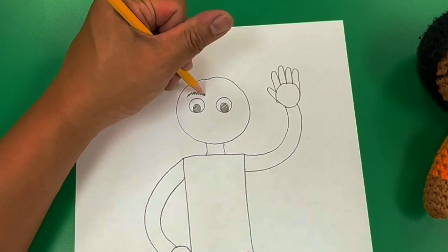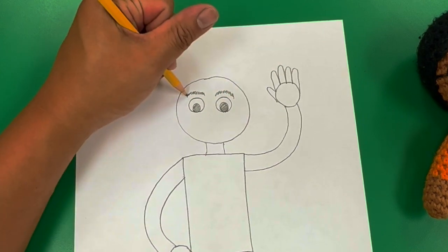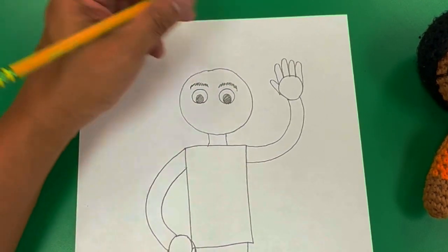Can't forget the eyebrows, so I'm just going to scribble very lightly two lines above the eyes for my eyebrows.